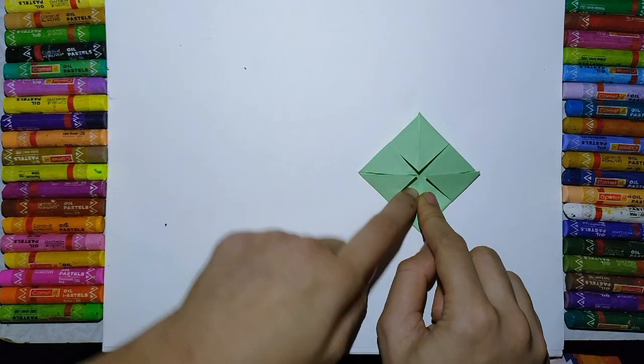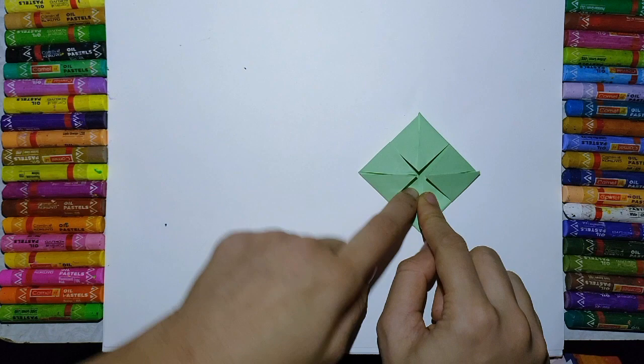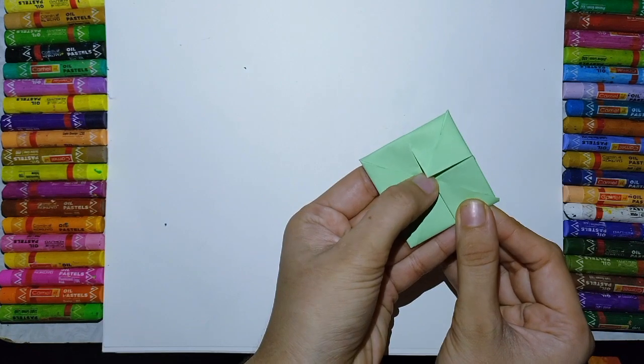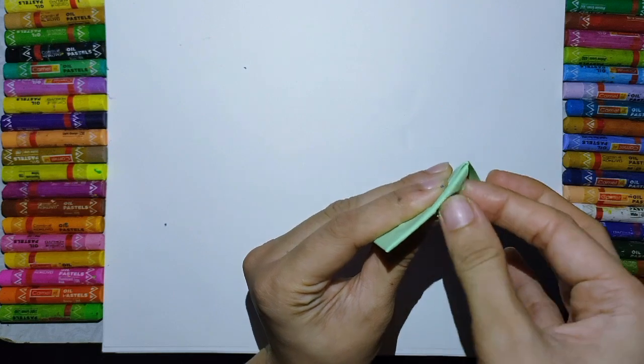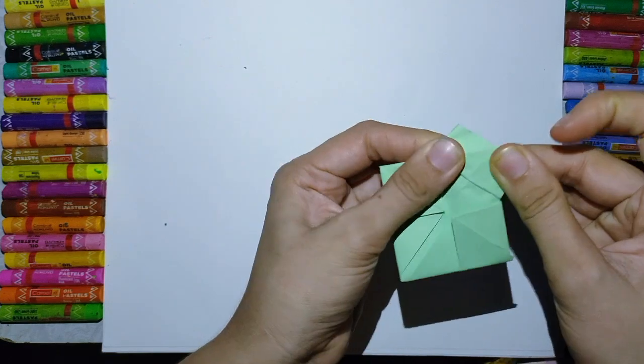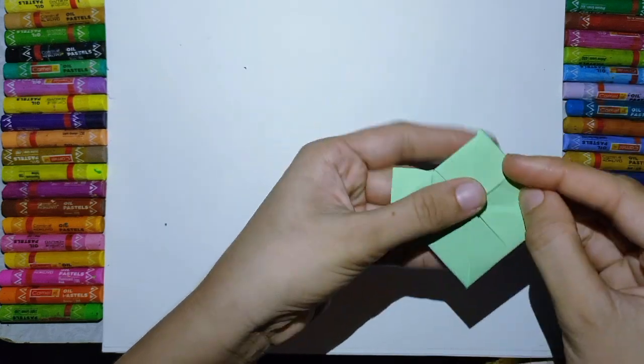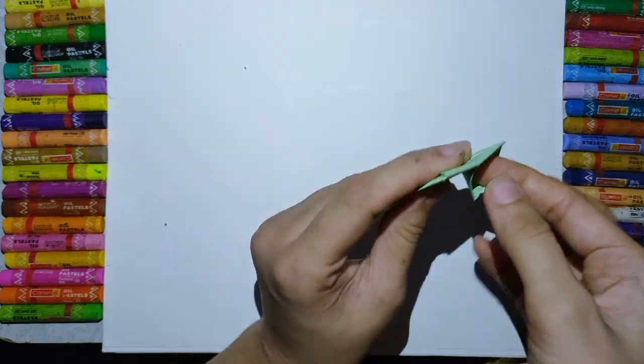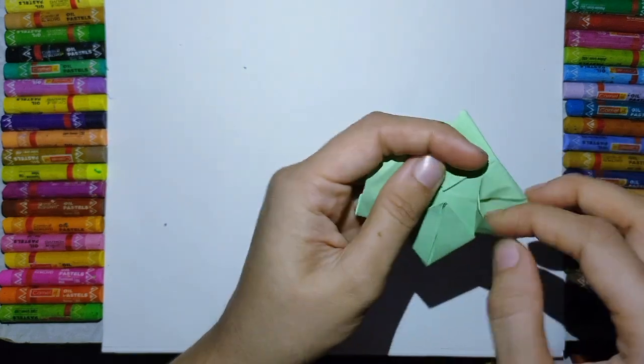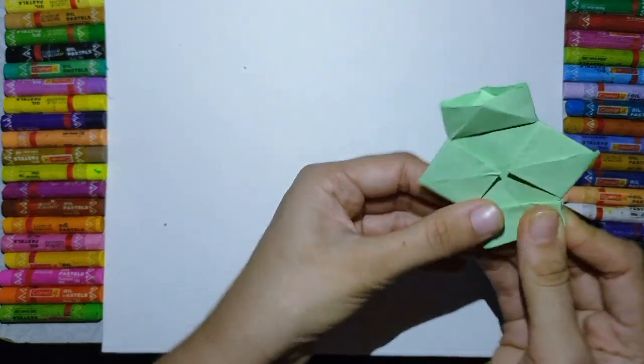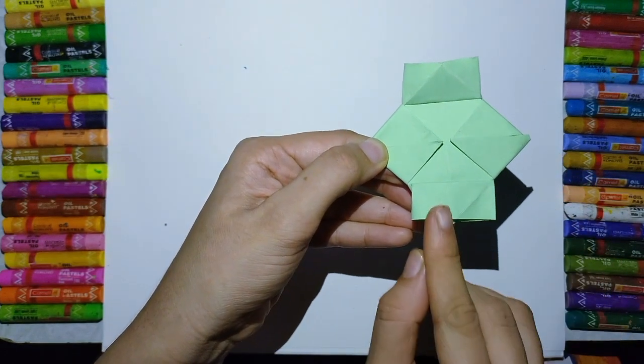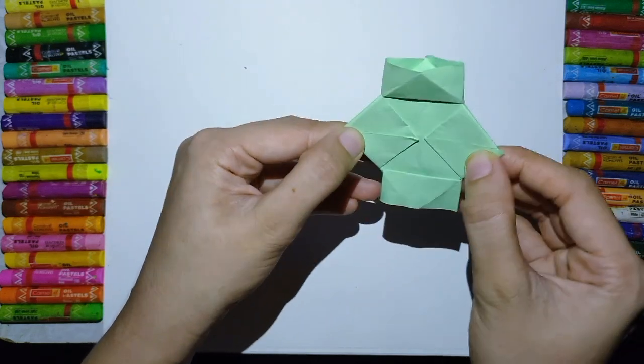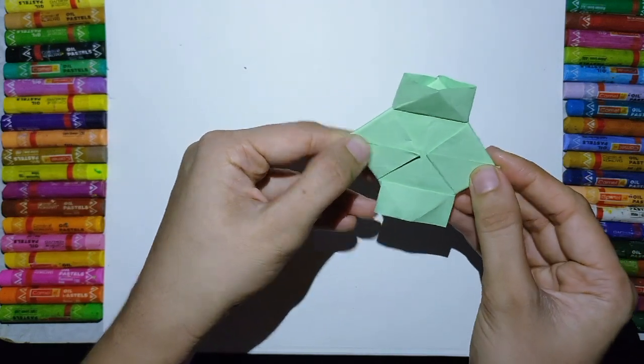Now the next process is open this side of the paper like that and this side of the paper. This is our lantern. If you stick here strips, this will be our lantern. Am I clear everyone?